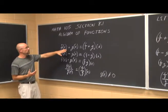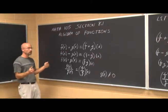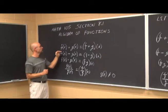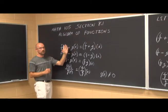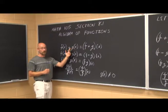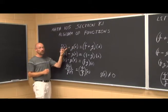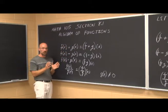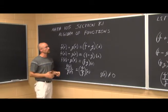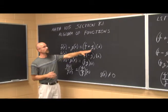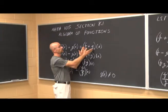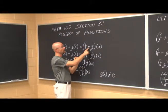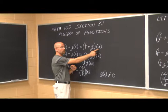The first thing we want to do is review the notation. f of x is function notation for one function, g of x is function notation for a different unique function, but both have the variable x — they're both dependent on the same variable. The notation for adding functions means f and g need to be added together with the same variable x.